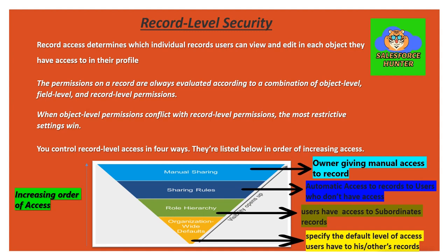For example, suppose a user is assigned to a profile which doesn't provide any access to the account object. Since you don't have access to the object itself, there's no point talking about record level security — the object level permission is the most restrictive here. But if we have given all access to the account for that profile, then the next restrictive layer would be record level security.